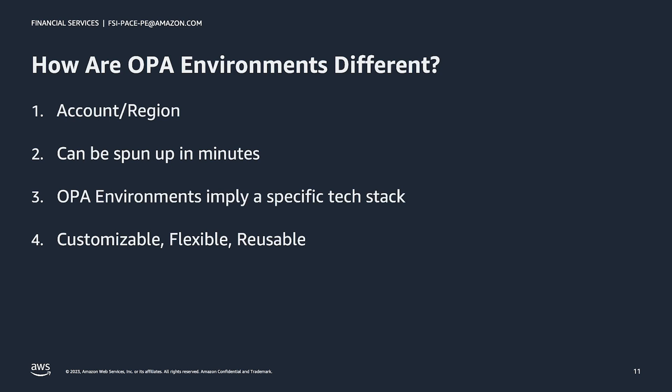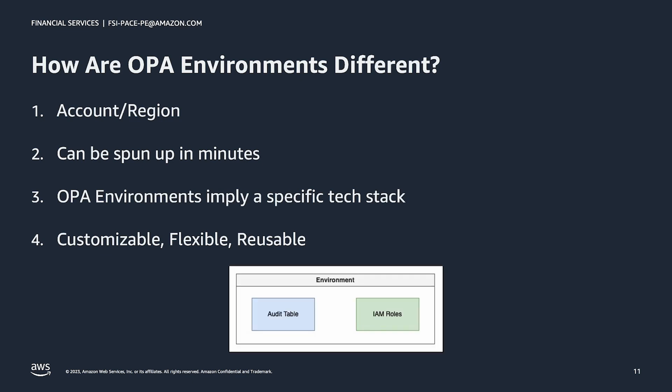If your business wants to run a new type of application that's totally different from any of the examples OPA provides out of the box, you can easily add your own environment types and application templates. OPA requires a small number of mandatory components in any new custom environment: an audit table to hold audit records for user activities against an application, and IAM roles that OPA and its CI-CD pipelines can assume in the AWS account that runs the application. Other components very common to all environments would include a VPC, networking configurations, and KMS keys to encrypt data. Ultimately, it's up to your business to decide what components are required for all environments and which are included only for certain use cases.